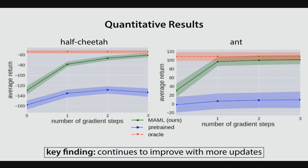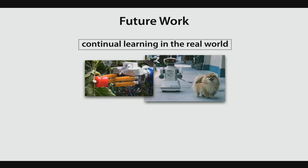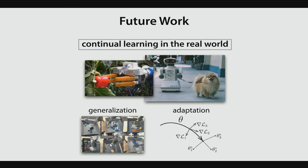Now I'll talk about some future work. One key component towards getting robots into the real world is continual learning. Generalization and adaptation are steps in that direction, but to get continual learning, we need to build a representation useful for many different tasks, such that when a robot encounters new experience it can quickly relate that to prior representations — implicitly relating the tasks it's seen now, before, and the tasks it might encounter in the future.